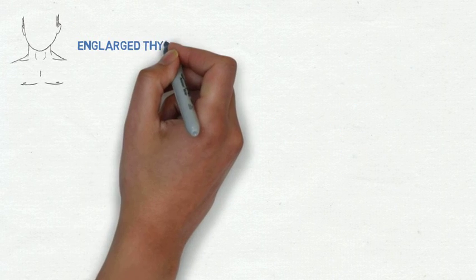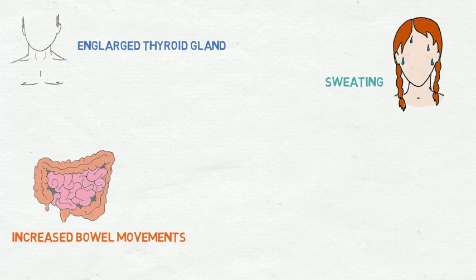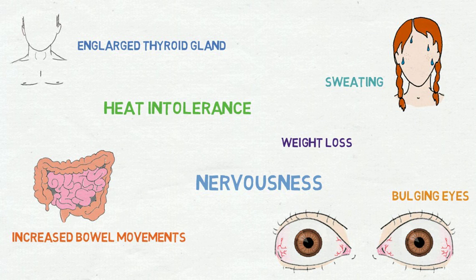This causes a variety of symptoms such as an enlarged thyroid gland, excessive sweating, increased bowel movements, heat intolerance, nervousness, marked weight loss without a loss of appetite, and bulging of the eyes.